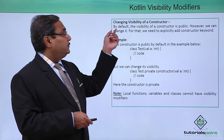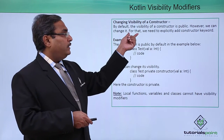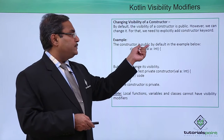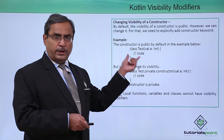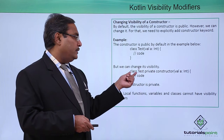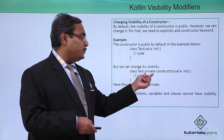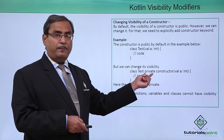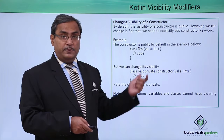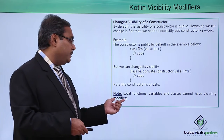Changing the visibility of a constructor. By default the visibility of a constructor is public, however we can change it. For that we need to explicitly add the constructor keyword. In the example below, no modifier is written so the constructor is public by default. But if you want to change it, you write 'class Test private constructor()'. In this way we are changing the modifier from public to private. Local functions, variables, and classes cannot have visibility modifiers.